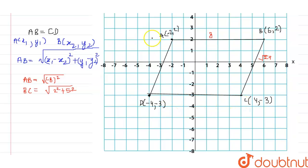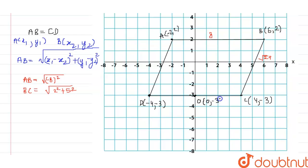Now we have to find the midpoint of line segment CD. We can do it graphically or with a formula. Graphically, since CD is 8 units long, the midpoint lies 4 units away from point D. The midpoint, let's call it O, has coordinates (0, -3) since it lies on the negative x-axis. This can also be confirmed using the midpoint formula, giving the same result.